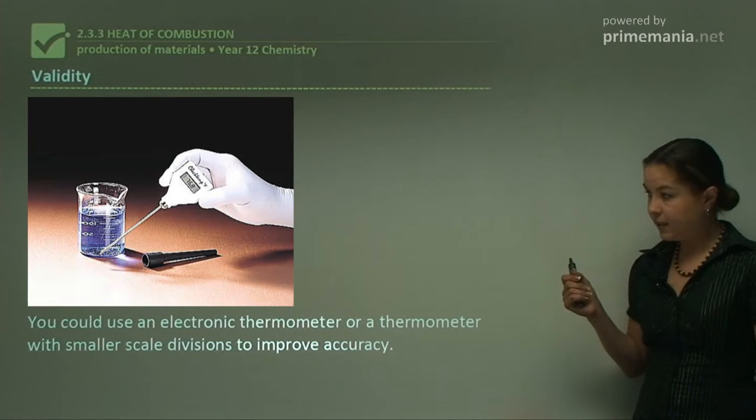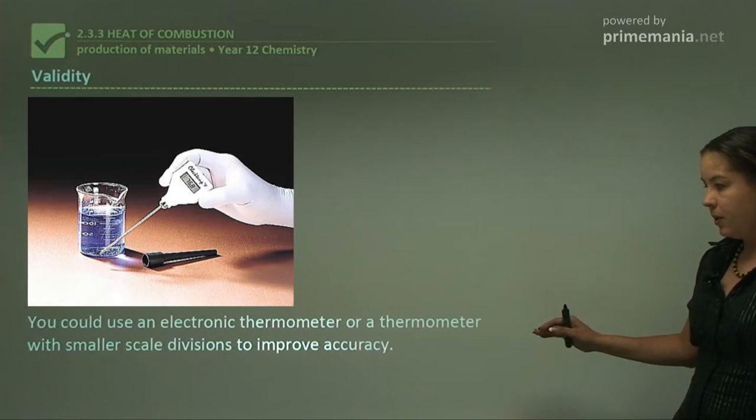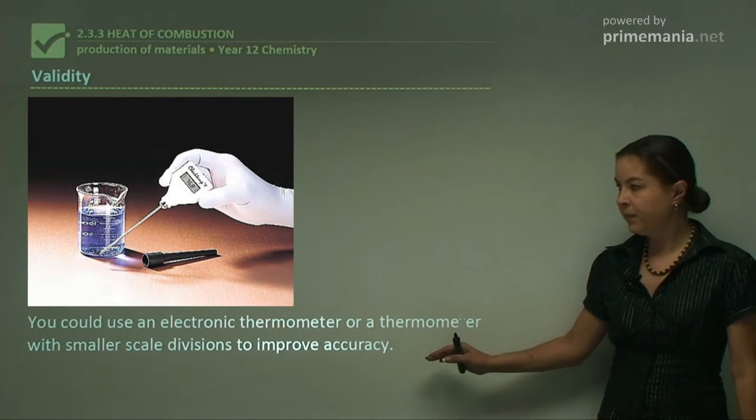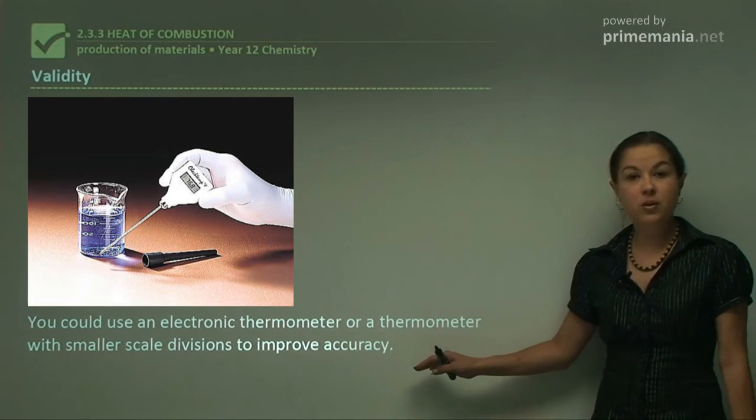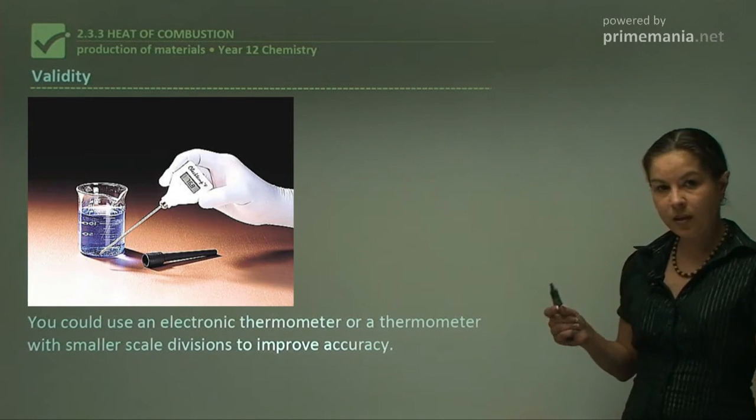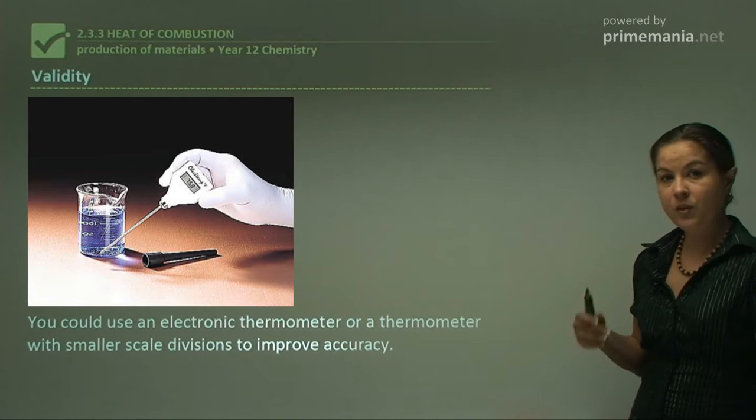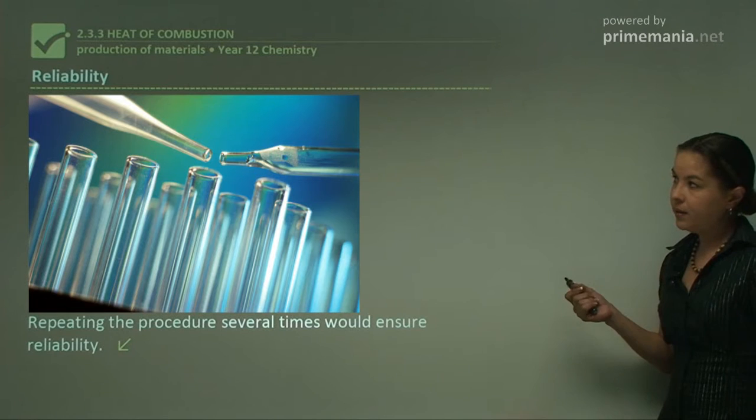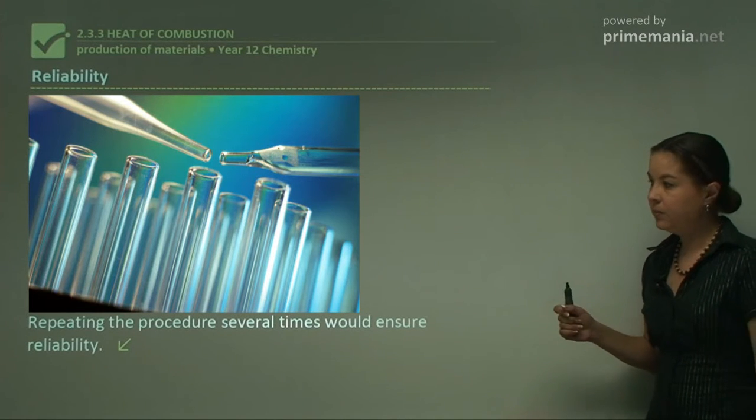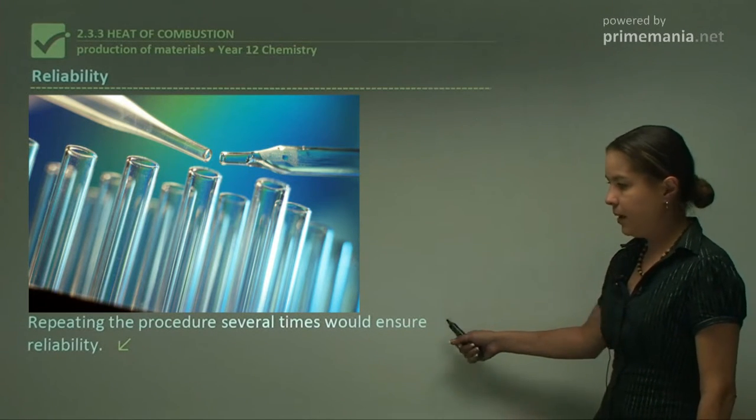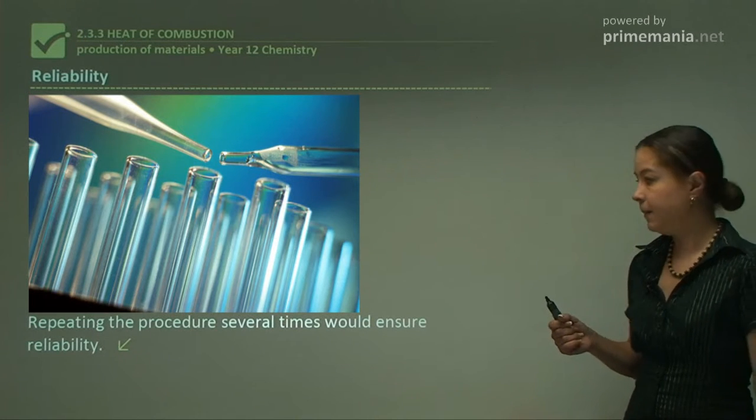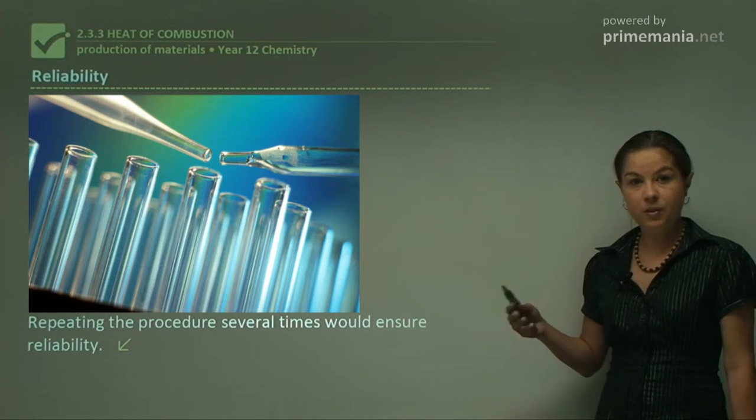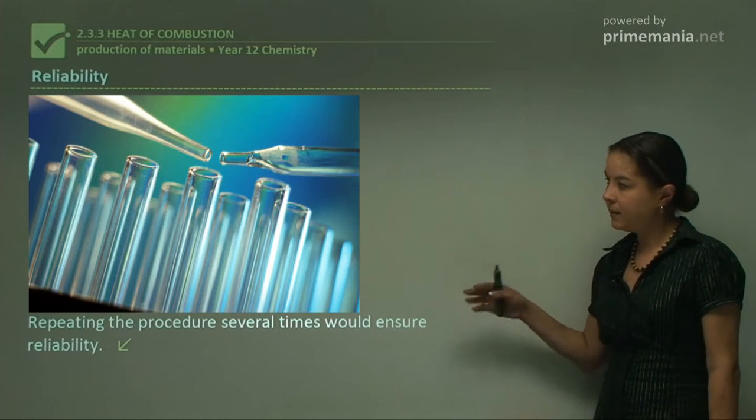For validity, you could use an electronic thermometer or a thermometer with smaller scale divisions to improve accuracy. That's not usually possible in a school setting, but if you wanted more accurate results, this is a way that you could do that to improve the experimental procedure. And to make this experiment more reliable, you could repeat the procedure several times, and that would ensure more reliability. But sometimes in the school you don't have time for that. But with experiments, it's always better to repeat them to get more results, more data, more reliable.